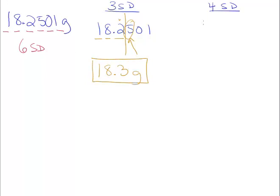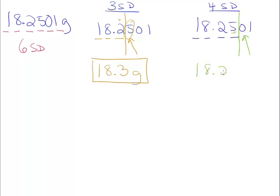For four significant digits: 18.2501 — we want to keep four digits: 1, 2, 3, 4. We put the barrier up, and the number we focus on is the zero, which is clearly less than five, so this number remains the same. Rounded to four significant digits, we have 18.25 grams.